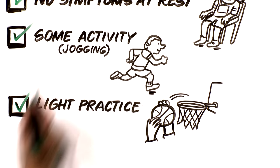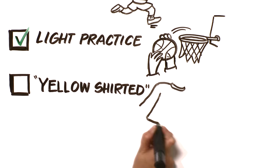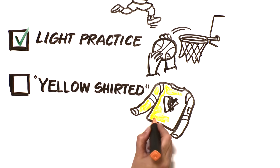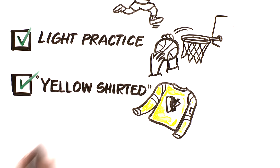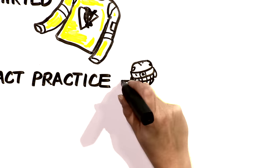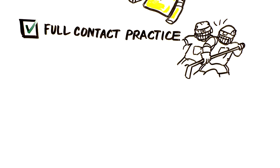Then we allow you to be yellow shirted if there's no symptoms—meaning you can participate in practice, but nobody can come into contact with you. If that works out, you can go to a full contact practice. And if that works out, you can return to play.